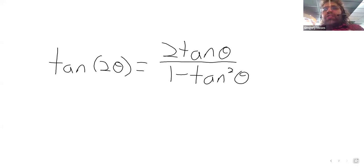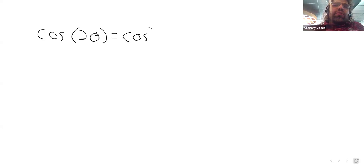And the reason I saved the cosine, you probably expected that the cosine would come next, but the cosine is a little different because the cosine identity is really several identities. So the cosine of two theta equals the cosine squared minus the sine squared.